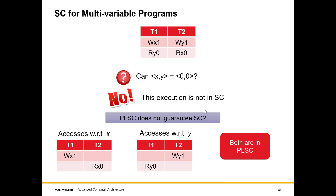Now let us discuss the multivariable case with our running example. There are two threads T1 and T2: T1 writes 1 to X, T2 writes 1 to Y, then we read. T1 reads Y — it reads 0 because the load is issued early. Likewise T2 reads X to be 0. Can X, Y be equal to 0, 0? In a modern out-of-order processor, yes. As per SC, no — this execution is clearly not sequentially consistent.